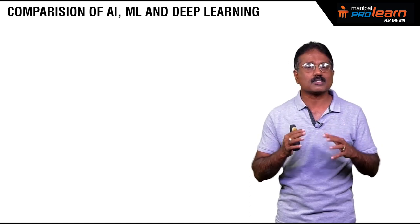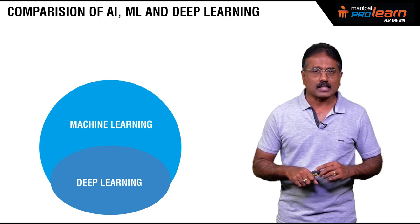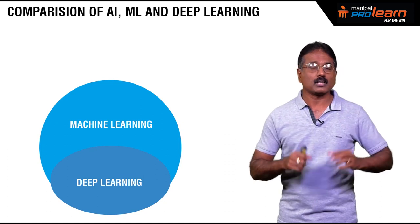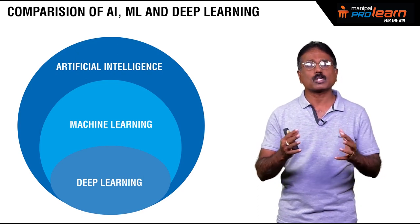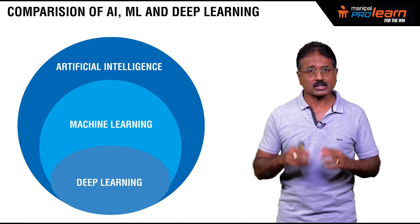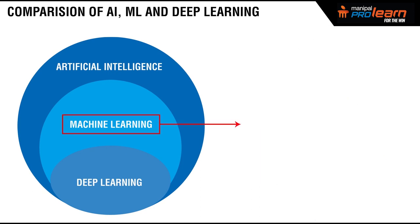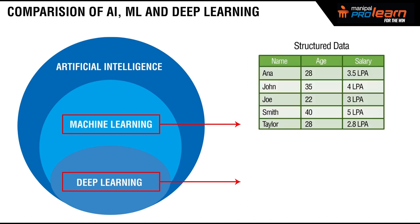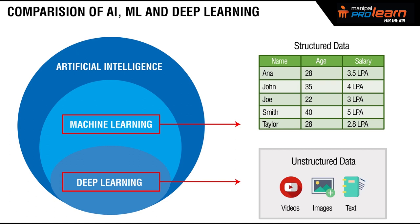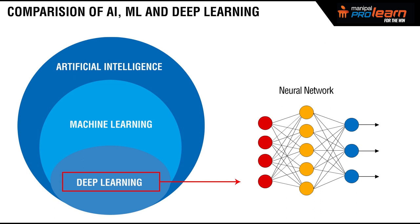When you talk about AI, you will also hear terms like deep learning, machine learning, and neural network. Artificial Intelligence is the overall concept. In order to develop an AI system, you need machine learning, where you teach a system without explicitly writing a program. A subset of machine learning is deep learning. When you are dealing with structured data, we call that machine learning, and when we deal with unstructured data like video, images, and text, that's when we use deep learning. And in order to implement deep learning, you need neural networks. So you have AI, then ML, a subset of that is DL — deep learning — and to use deep learning, we use neural networks.